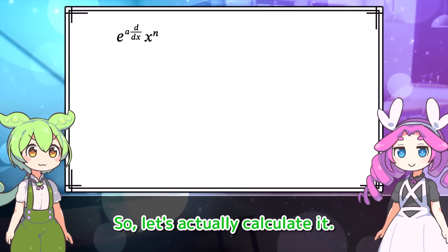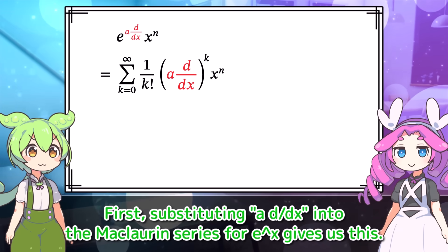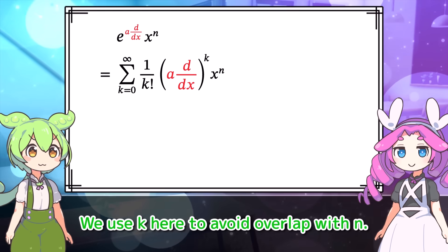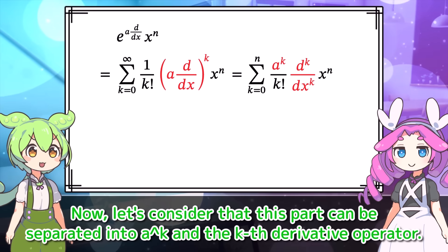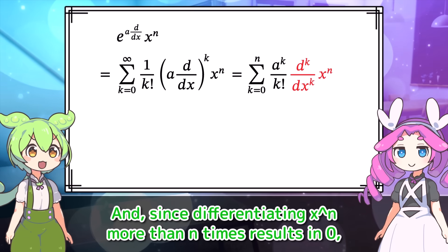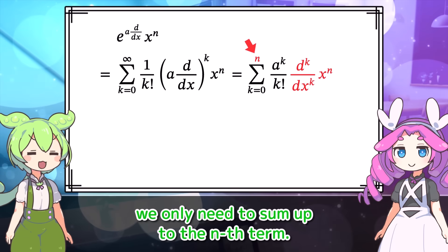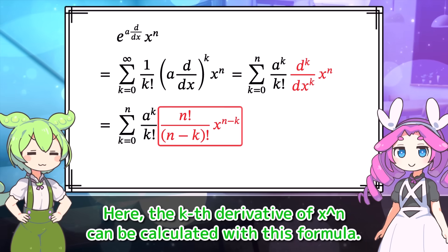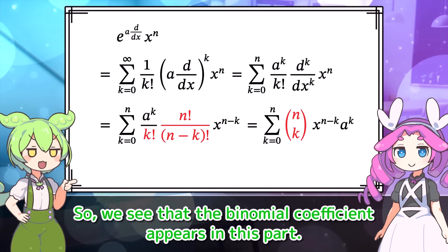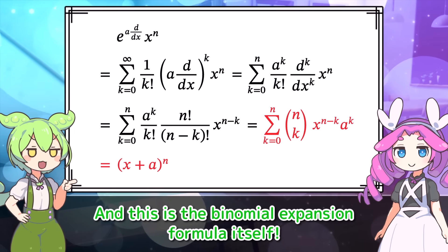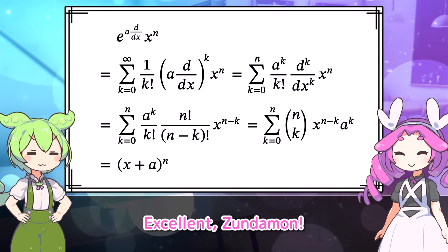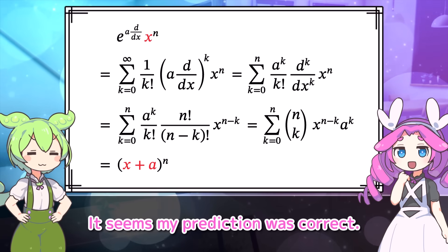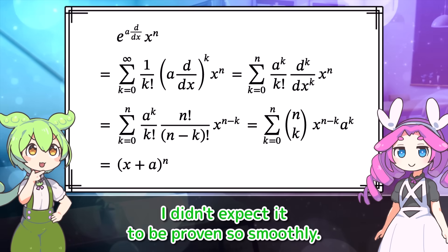So let's actually calculate it. First, substituting A·D by DX into the Maclaurin series for E to the X gives us this. We use K here to avoid overlap with N. Now let's consider that this part can be separated into A to the K and the Kth derivative operator. Since differentiating X to the N more than N times results in 0, we only need to sum up to the Nth term. The Kth derivative of X to the N can be calculated with this formula. So we see that the binomial coefficient appears in this part, and this is the binomial expansion formula itself. Yes, X is shifted by A. It seems my prediction was correct.